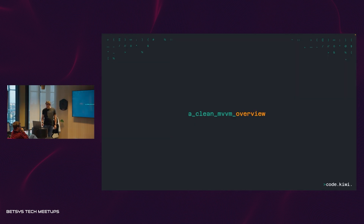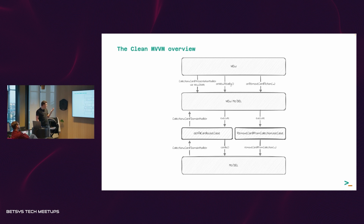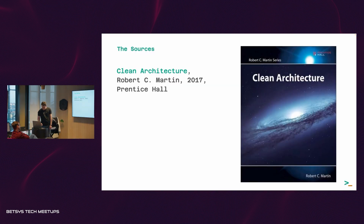A good question is: do I have to pick between Robert C. Martin's clean architecture and the industry-standard MVVM architecture components? They don't really go against each other — you can use both. Think of the ViewModel as an interface layer between your use cases and your views. Some authors argue that the architecture components ViewModel breaks some rules of clean architecture, but you don't have to use it if you don't want to.